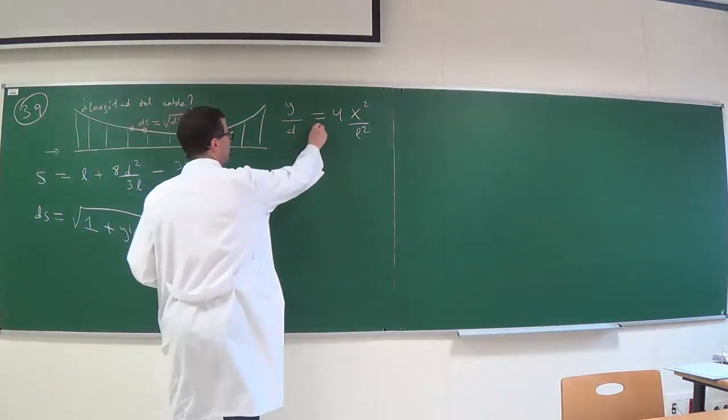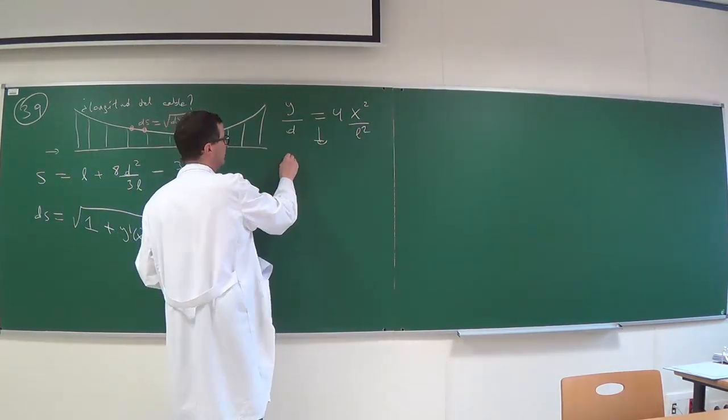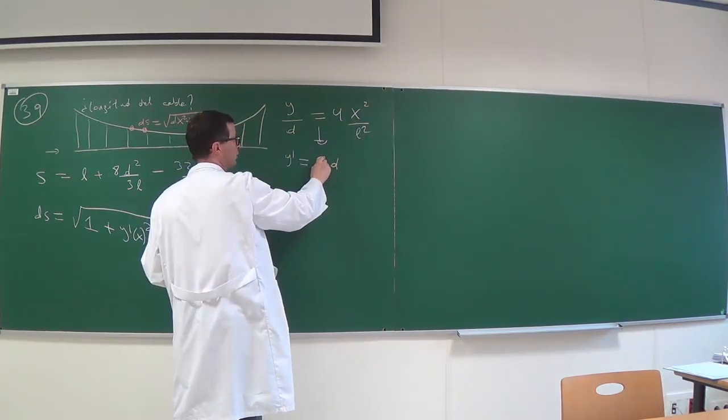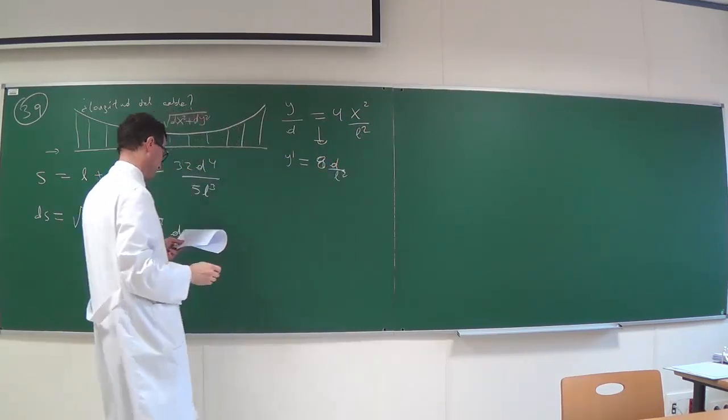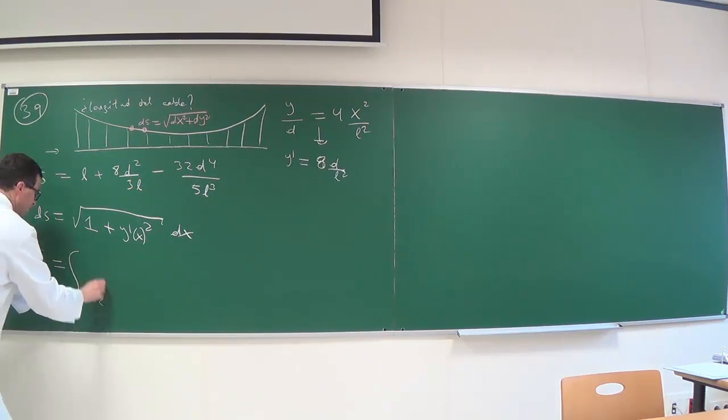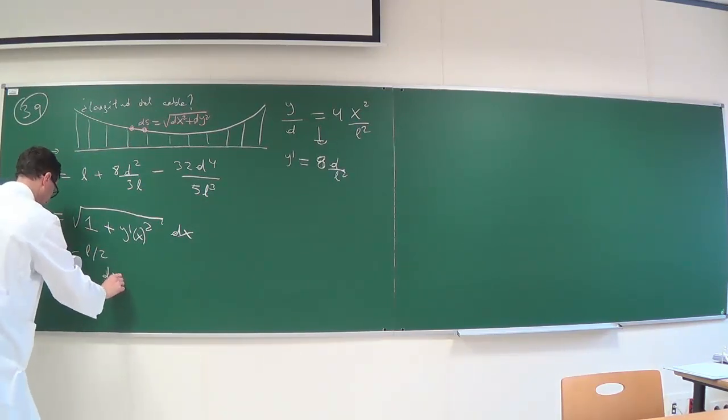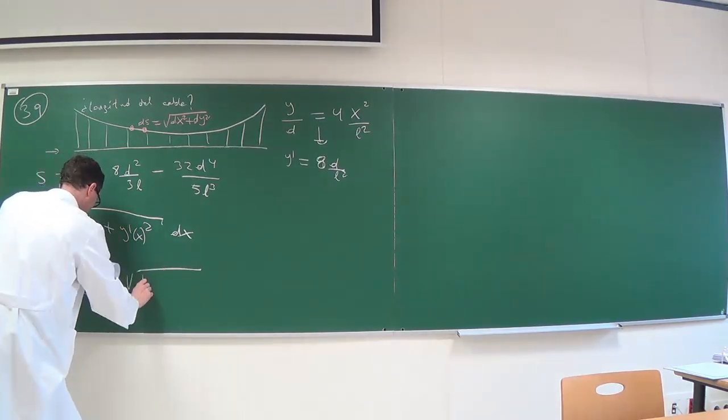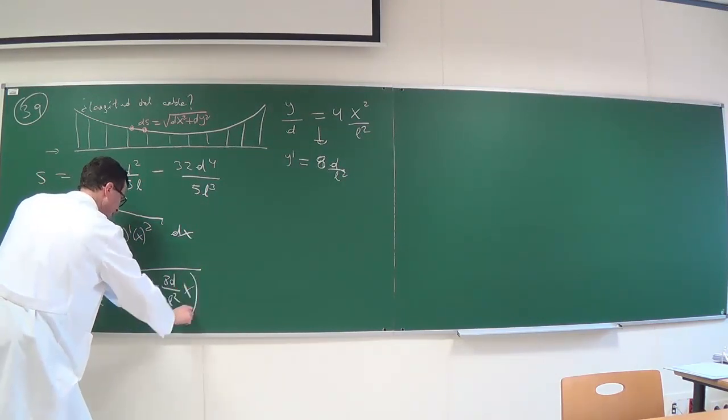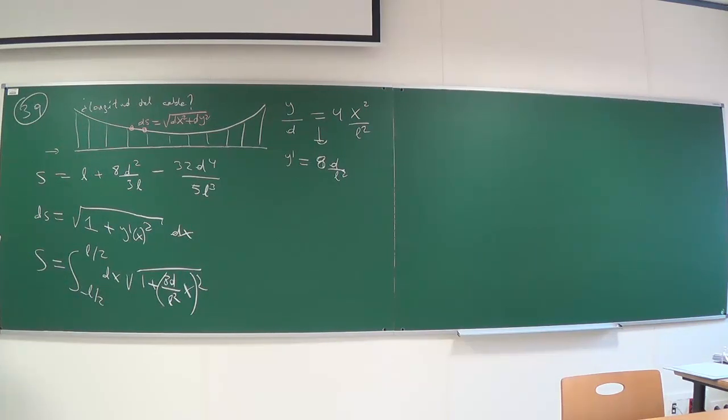That is to say, the differential of S is the square root of 1 plus Y' of X squared, the differential of X. The derivative Y' is 4D by 2, which turns 4 into 8, divided by L². We substitute this equation and the length of the cable is the integral between minus L/2 and L/2 of the differential of X, square root of 1 plus 8D divided by L² times X squared. Can you see it?